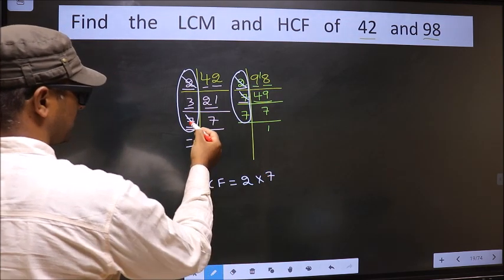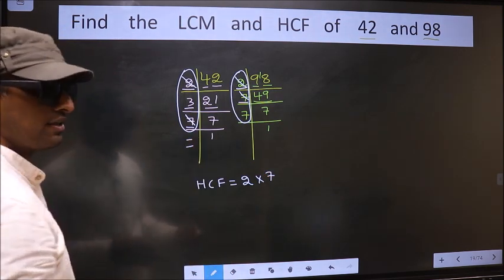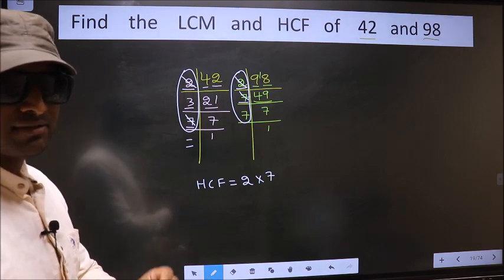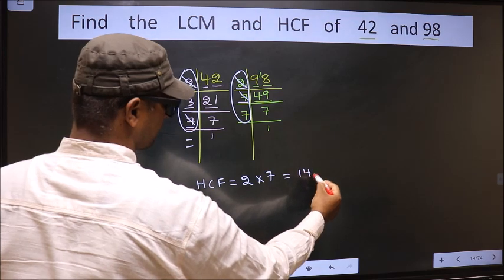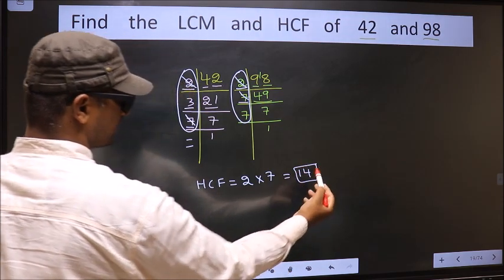No more numbers have been left. Therefore, our HCF is 2 times 7, 14. So 14 is our HCF.